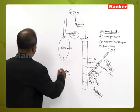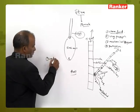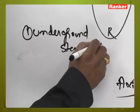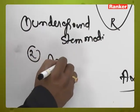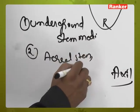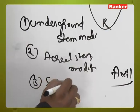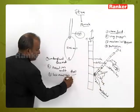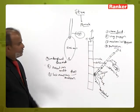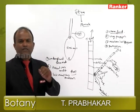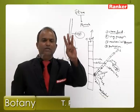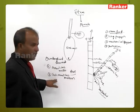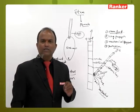Now we look at stem modifications. There are three types of stem modifications: underground stem modification, aerial stem modification, and sub-aerial stem modification.